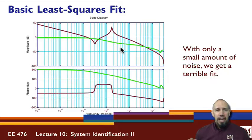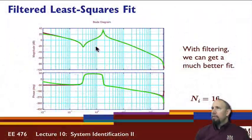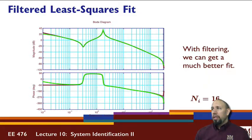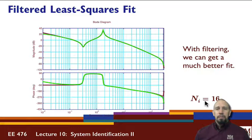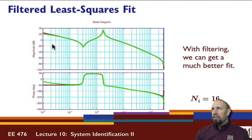What happens when we do the filtering using the method I just described? This is what happens — I can get this kind of response. It's not perfect, but it does pretty well. Notice that we filtered 16 times — we did this whole process 16 times — and we were able to recover a pretty good fit to our data.